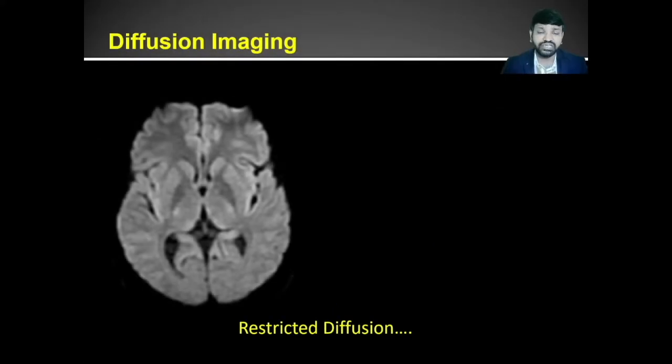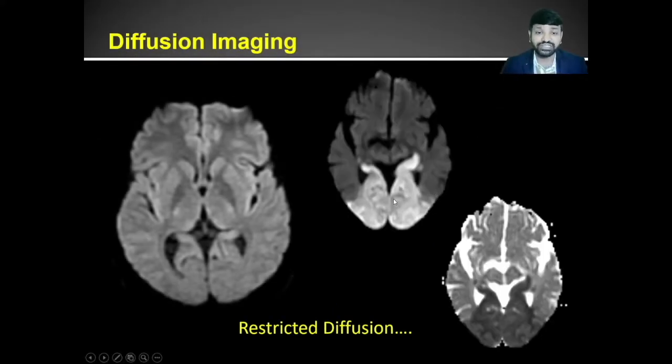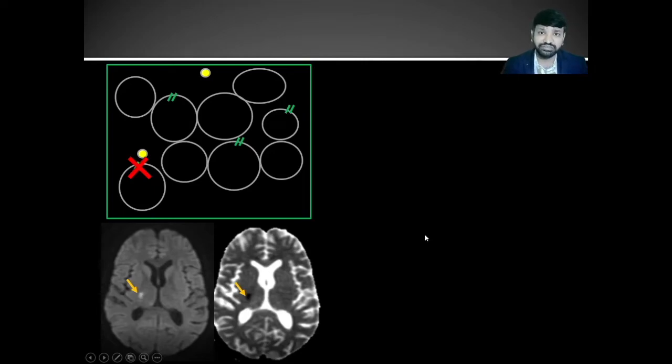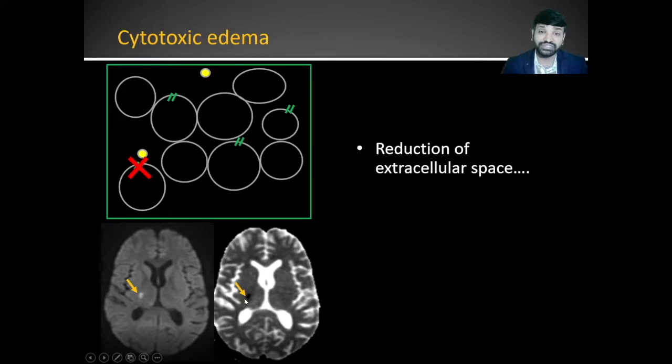So what is restricted diffusion? When you appreciate bright signal on the diffusion image with corresponding dark signal on ADC, that is when you call that restricted diffusion. So what is the reason for this restricted diffusion? Let's take a common example like acute ischemia. In case of acute ischemia, cytotoxic edema occurs. Because the cells are swollen up, the space for the water molecule in the extracellular compartment will come down, leading to restriction of water molecular movement. That is seen as bright signal on diffusion and dark signal on ADC. The real reason for restricted diffusion here is the reduction of the extracellular space.